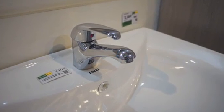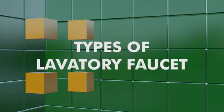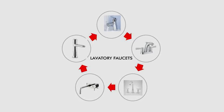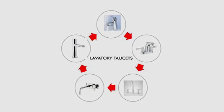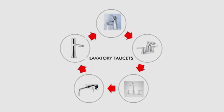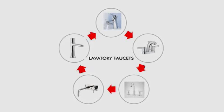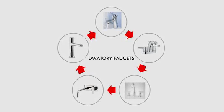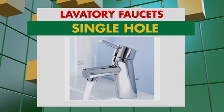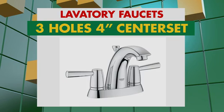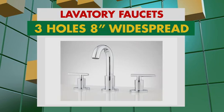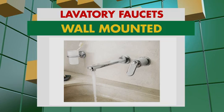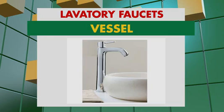Unahin natin ang salabatory faucets. Ang laboratory faucets na available sa Wilcon ay may iba't-ibang klase ng design at features, at ito ay may limang klase: single-hole faucets, 3-hole 4-inch center set faucets, 3-hole 8-inch widespread faucets, wall-mounted faucets, at vessel faucets.